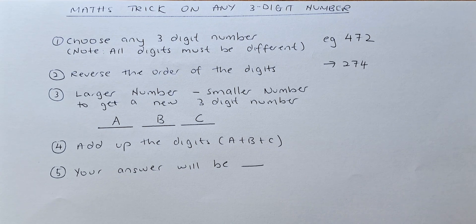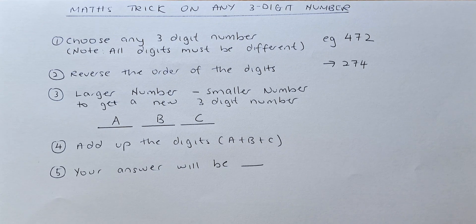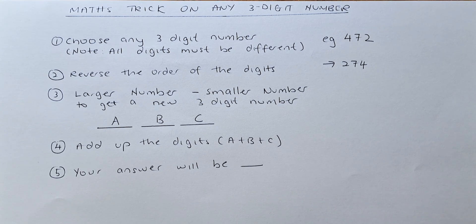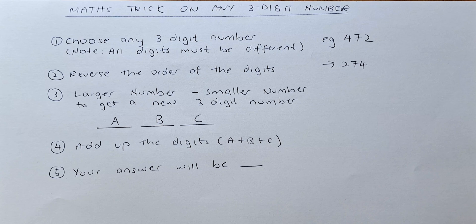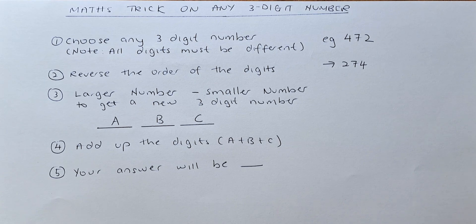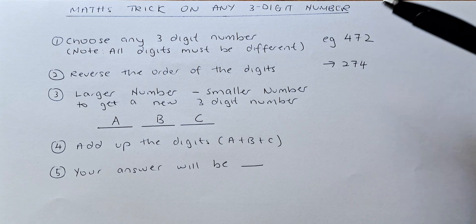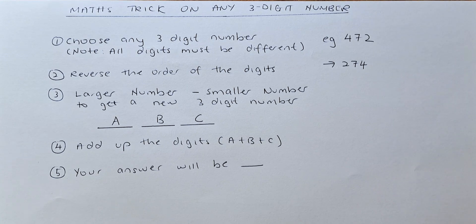Great. Next step, you are going to take the larger of the 2 numbers and minus the smaller number. So you have taken 472 and the reverse is 274. The bigger number is 472. So you are going to take 472 minus 274.